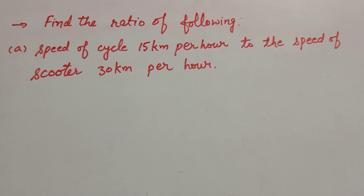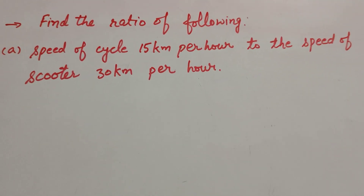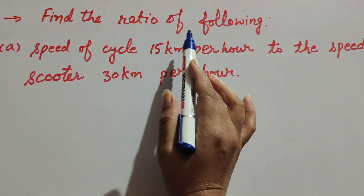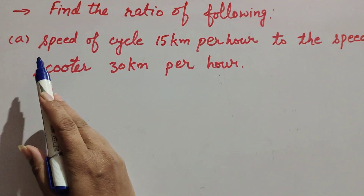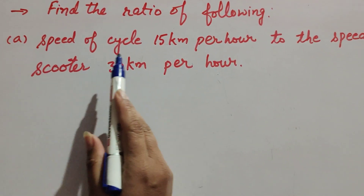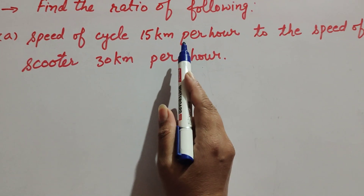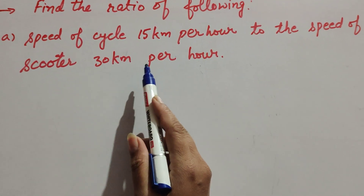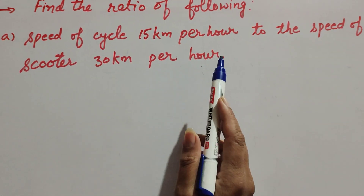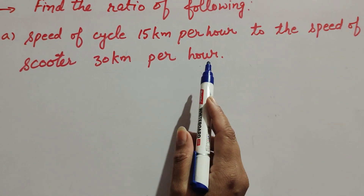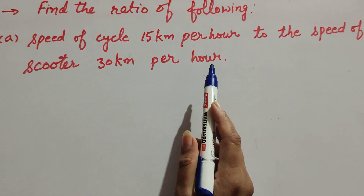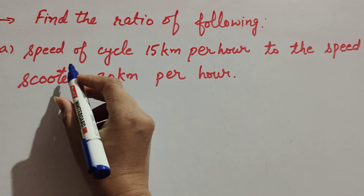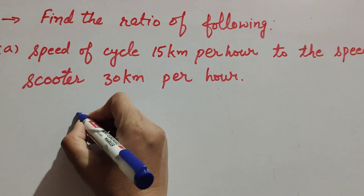Hello friends, welcome to my channel. In this video we discuss finding the ratio. In part A, we find the ratio of the speed of a cycle at 15 kilometers per hour to the speed of a scooter at 30 kilometers per hour. We find the ratio: speed of cycle to speed of scooter.